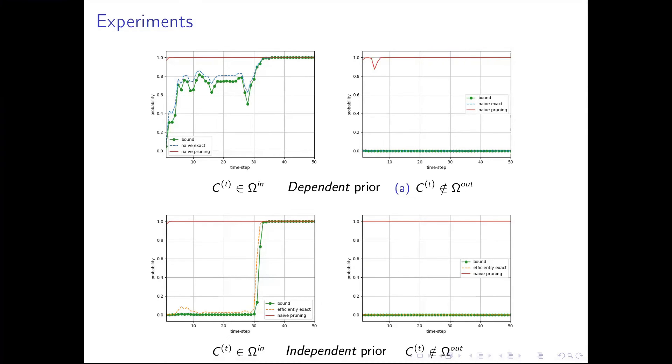Moreover, we show that in the dependent prior and in the independent prior, the bound is very close to the original probabilities.